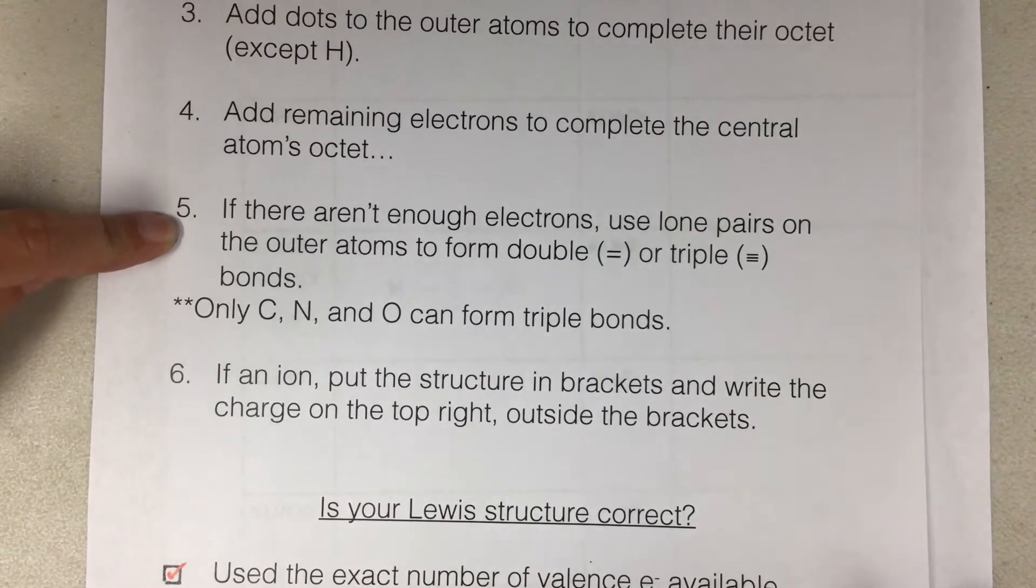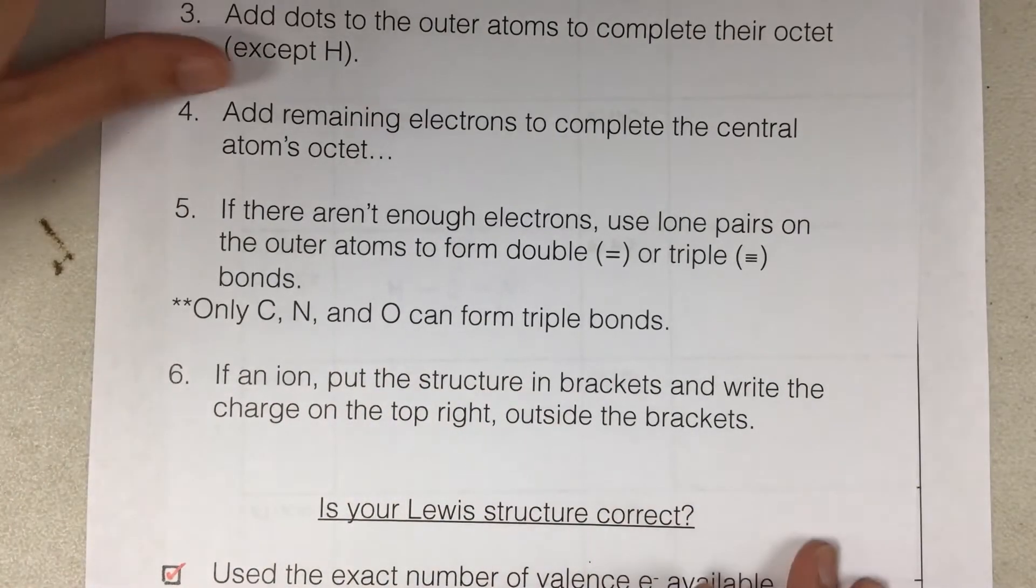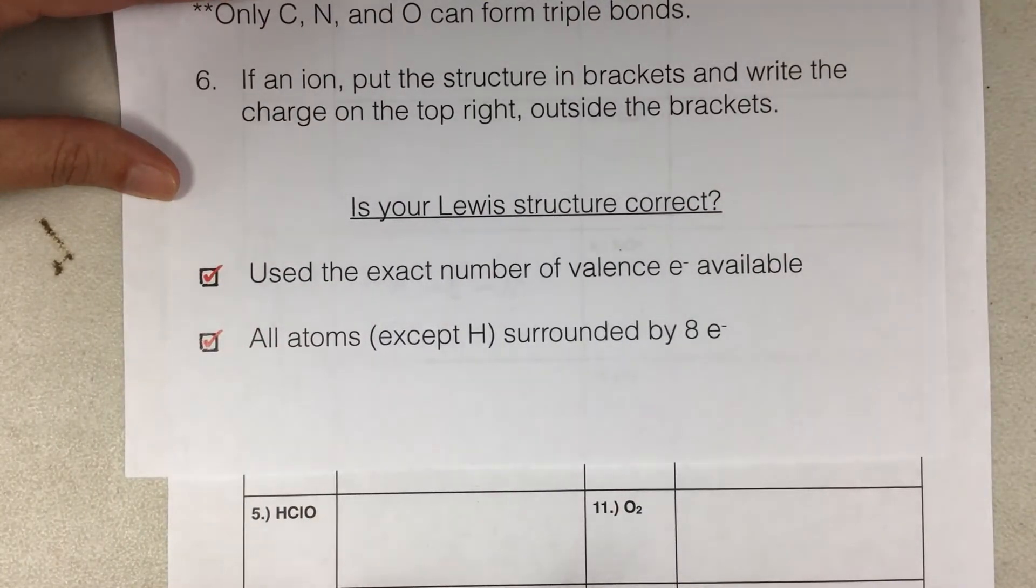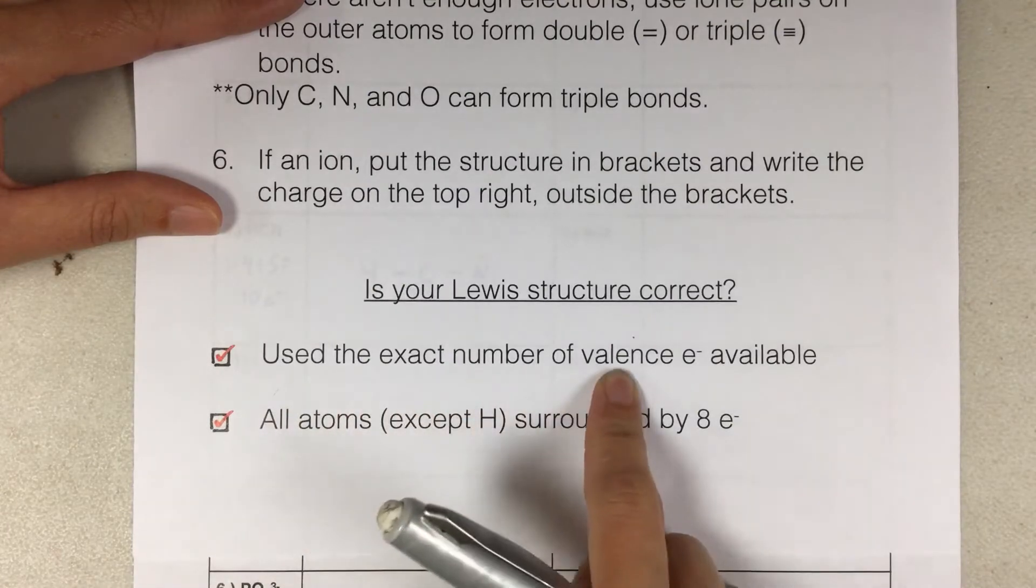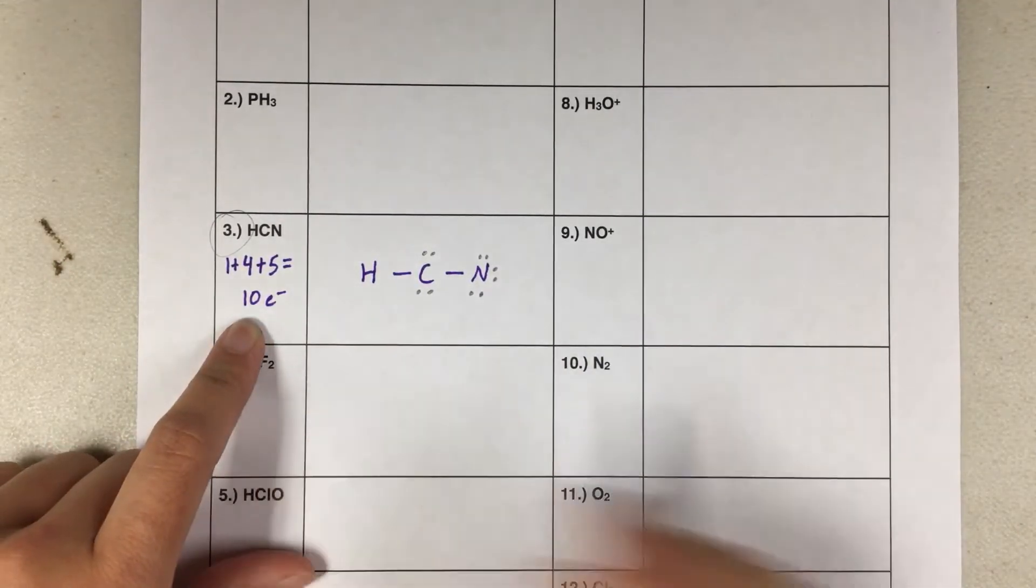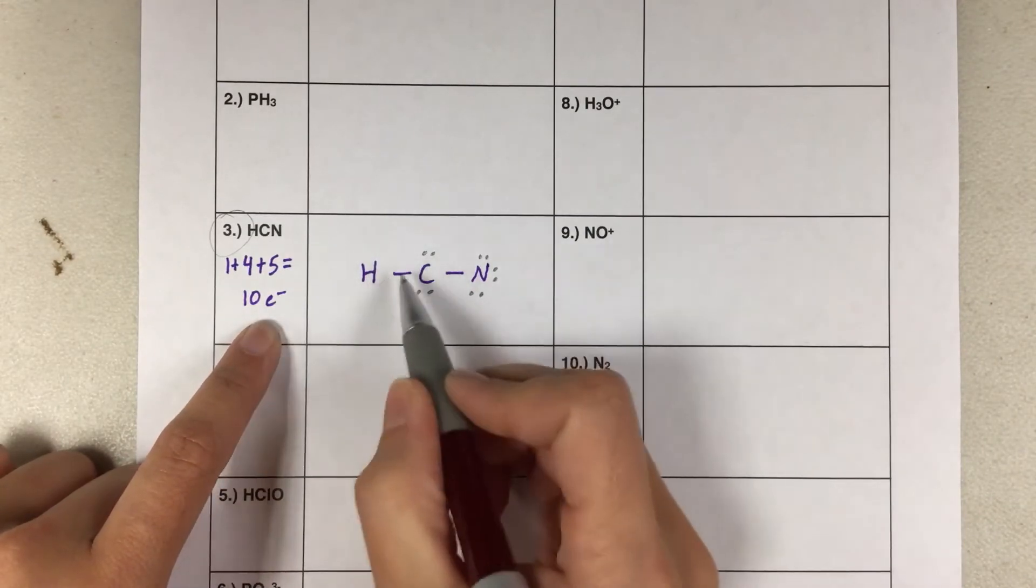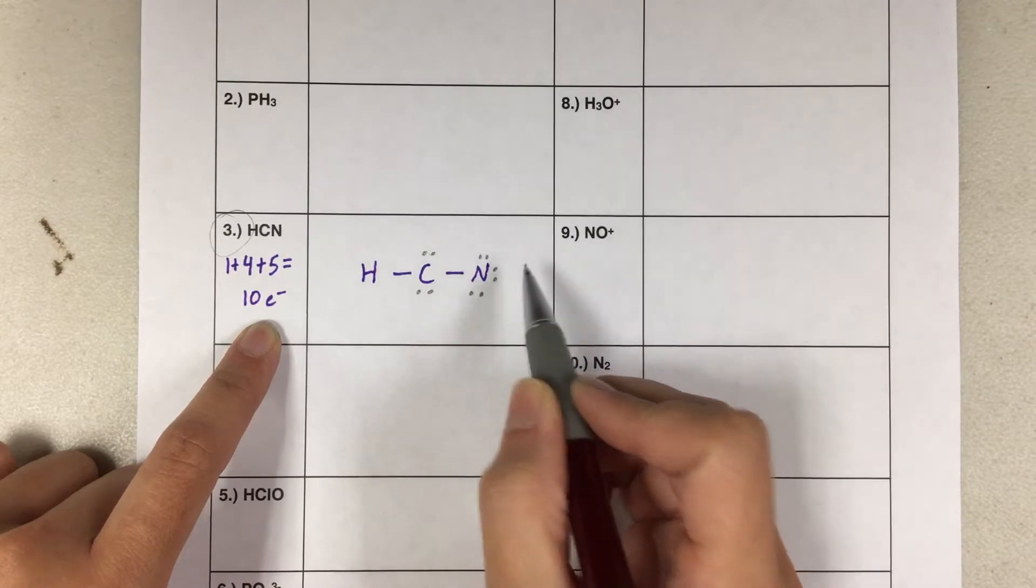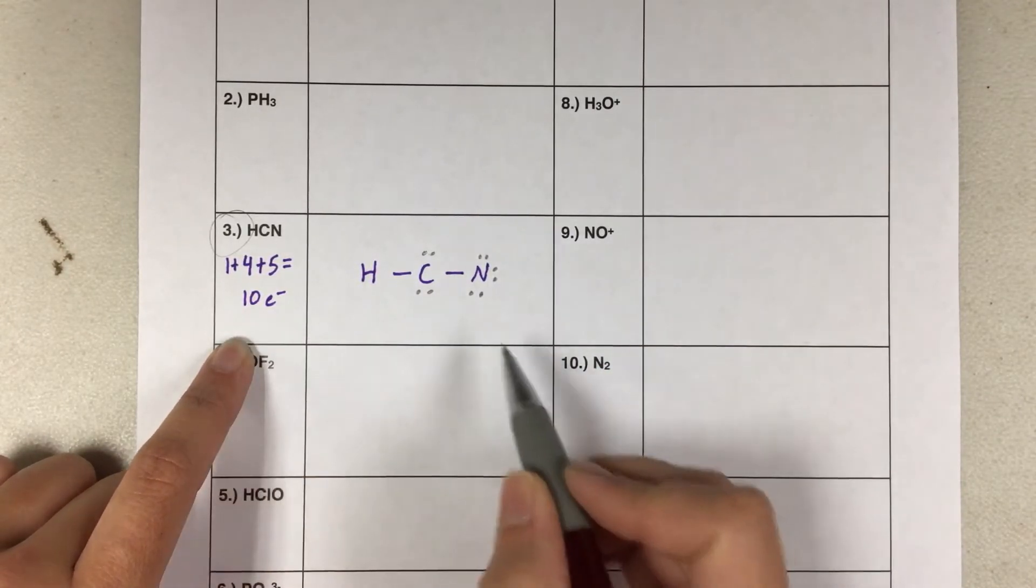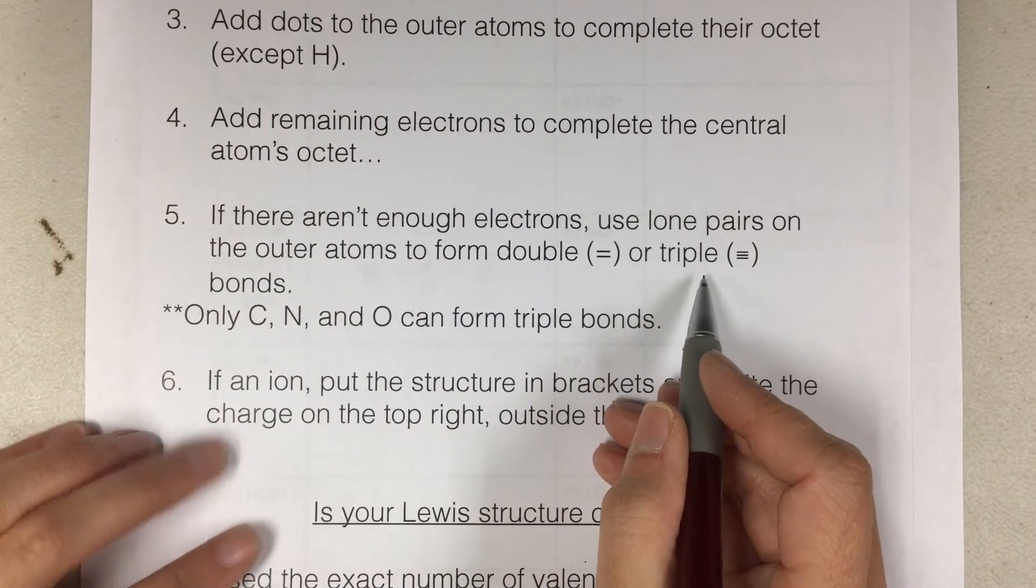Number five, if there aren't enough electrons, we have to use lone pairs on the outer atoms to form double or triple bonds. And there's also a little note that there are only three atoms that can triple bond: carbon, nitrogen, and oxygen. Did we use the exact number of valence electrons available? And do all the atoms have eight? Well, we know all the atoms have eight, except for hydrogen, so that's good. But did we use the correct number of electrons? Let's count. Two, four, six, eight, ten, twelve, fourteen. I've used 14 electrons. I only have 10. That's a big problem. So we need to get rid of two pairs of electrons. And in order to do that, we have to use double or triple bonds.